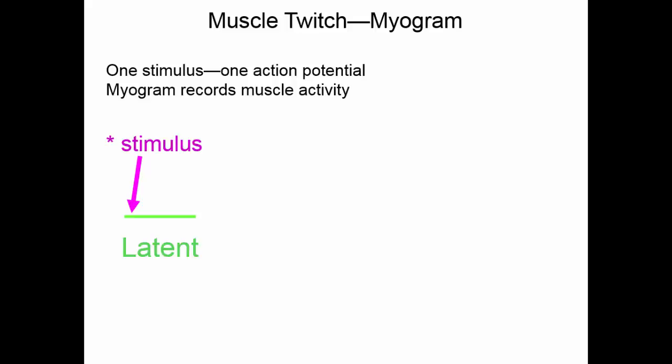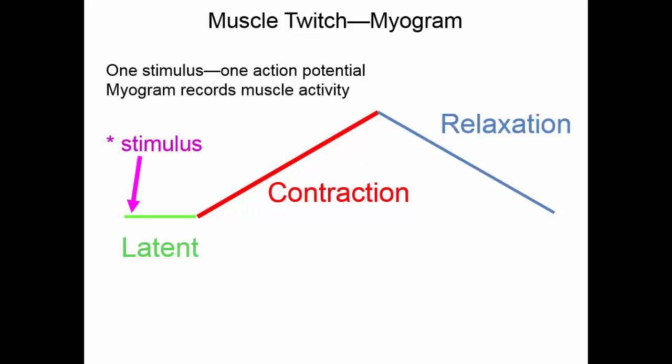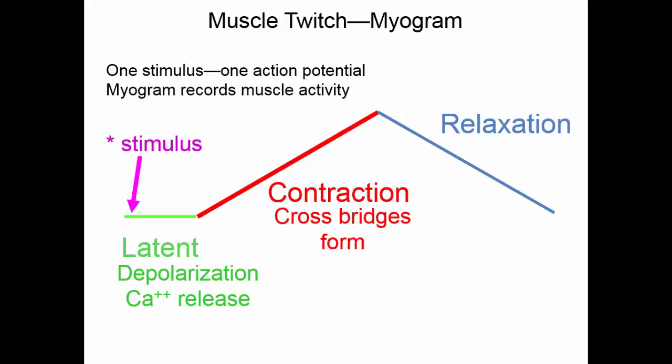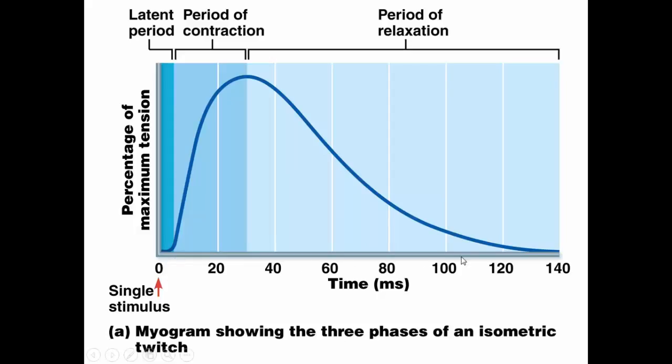After the latent period, we will see the muscle fibers shorten — this is the contraction period. Then, since there is not another stimulus, the muscle will relax — this is the relaxation period. During the latent period, we are depolarizing the sarcolemma and getting calcium released into the sarcoplasm. Once the calcium is out, cross bridges can form because calcium has opened up those myosin binding sites on the actin molecule. If there is not another stimulus, the sarcolemma repolarizes, calcium is pumped back into the sarcoplasmic reticulum, and the myosin binding sites are covered again. In terms of time in milliseconds, the latent period is very short, the contraction period follows, and then the relaxation period takes a little longer because it takes time to pump the calcium back in.